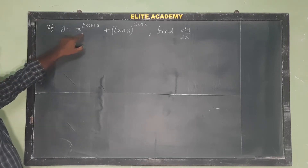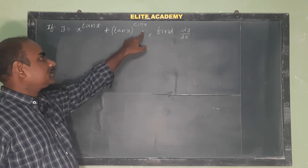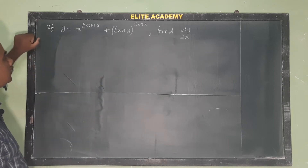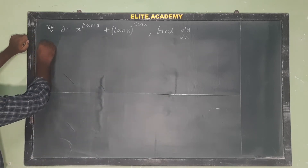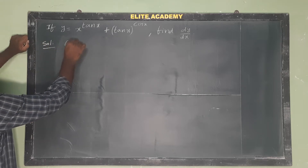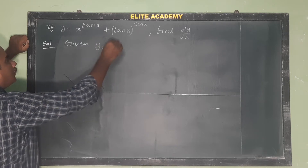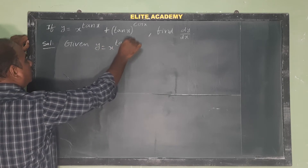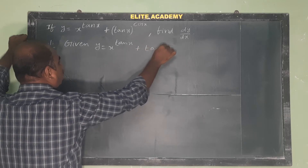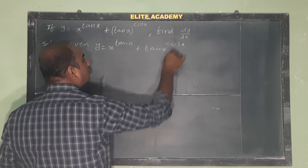If y is equal to x power tan x plus tan x power cos x, then find dy by dx. Solution: given y is equal to x power tan x plus tan x power cos x.